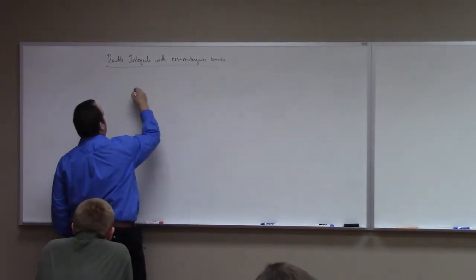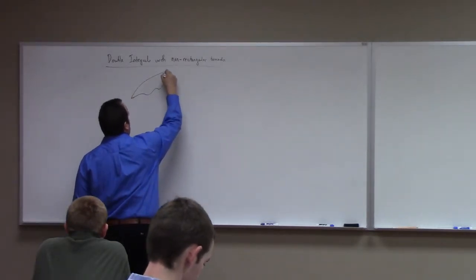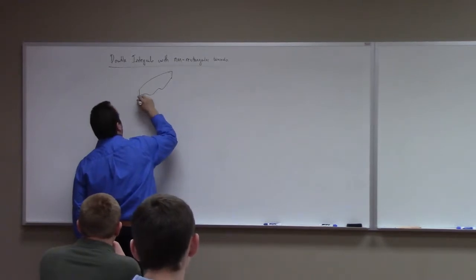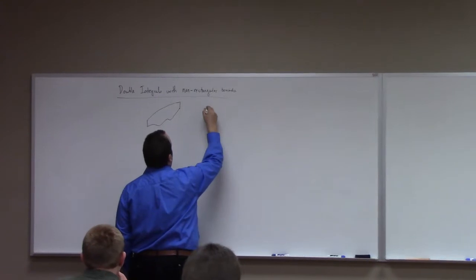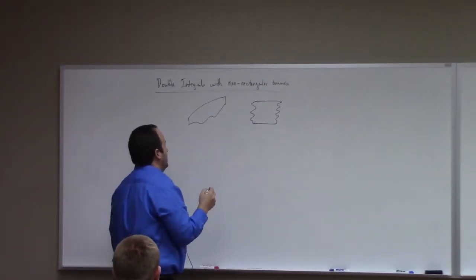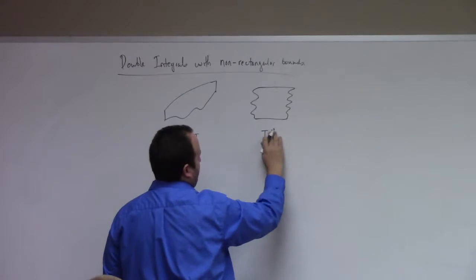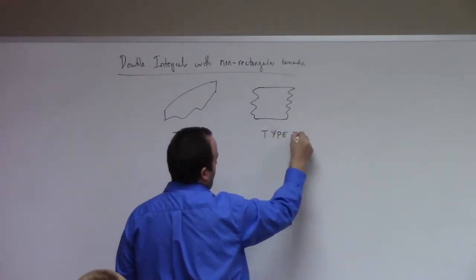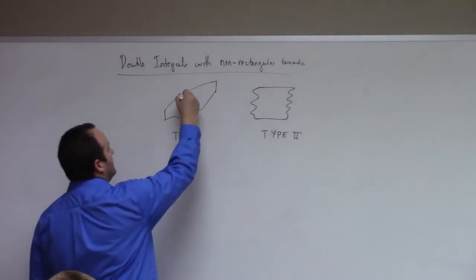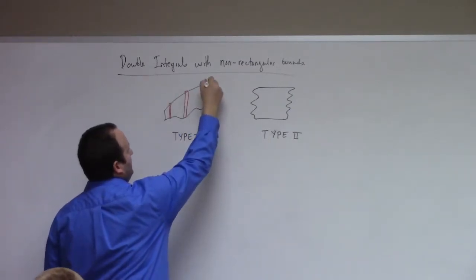So roughly speaking, there are two kinds of things that we look at. One could be like this, the other one could be like — let's see here. So this would be a type 1 region. This would be a so-called type 2 region. The point with both of these is you can draw an approximating rectangle in these in a systematic way on the whole thing.